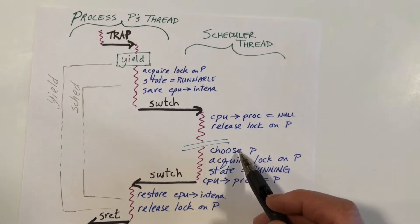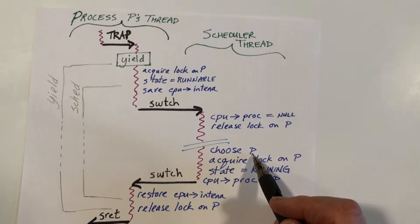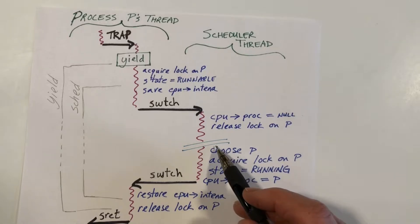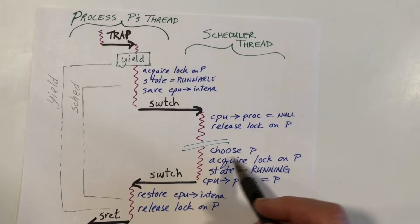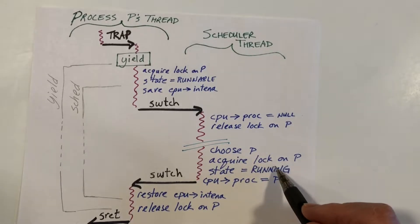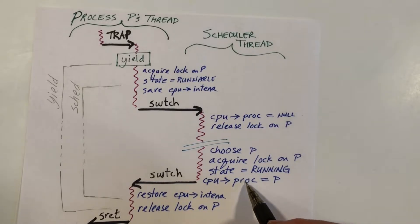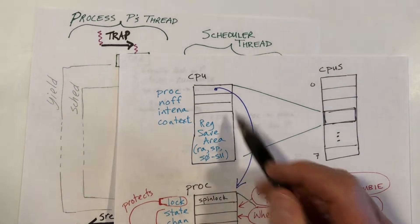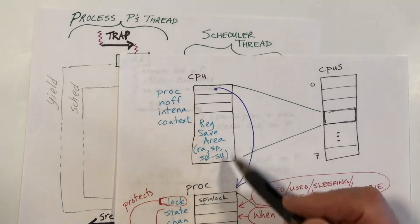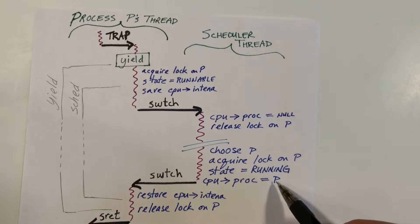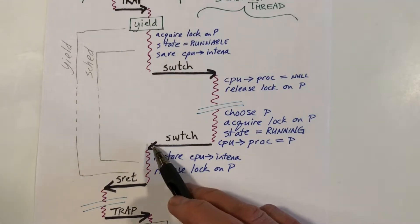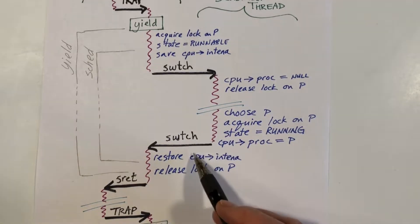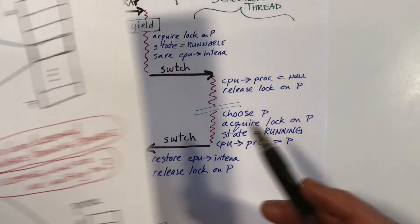Then we do some other stuff, and eventually we will choose to run P again. In the interim, we may give other processes time slices, but eventually this core or perhaps some other core will choose to give P a time slice. At that point, we acquire the lock on P again, change its state to running, and set the proc field for the current CPU — remembering it could be a different core. We then use switch to go back into the SCED function and the yield function. Switch is where the interesting stuff happens.